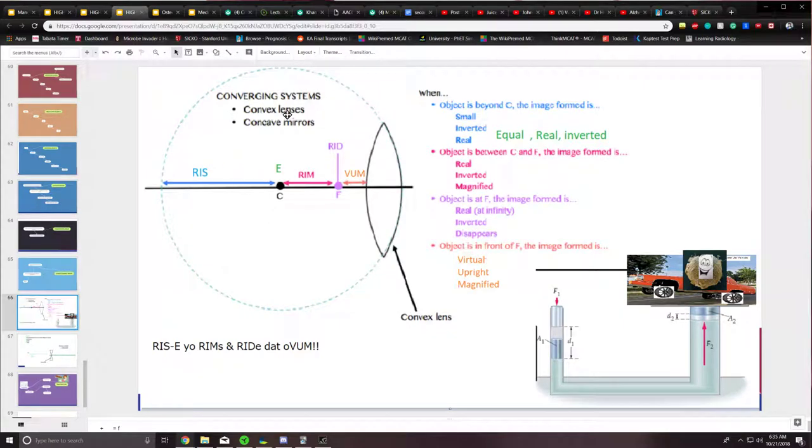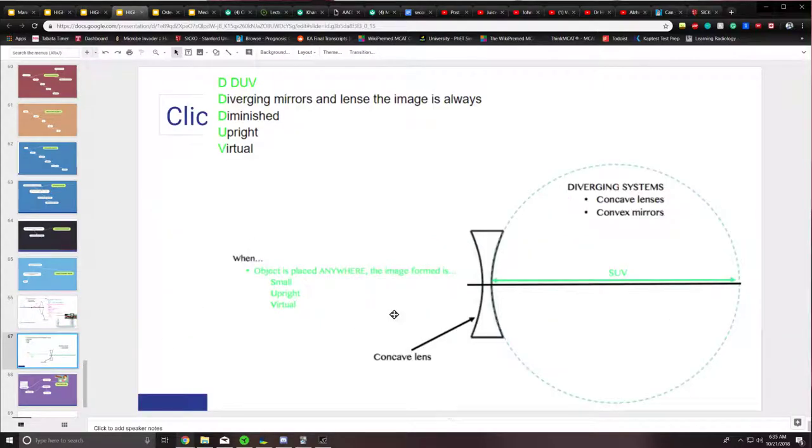First of all, converging systems consist of convex lenses and concave mirrors, while diverging systems consist of concave lenses and convex mirrors.